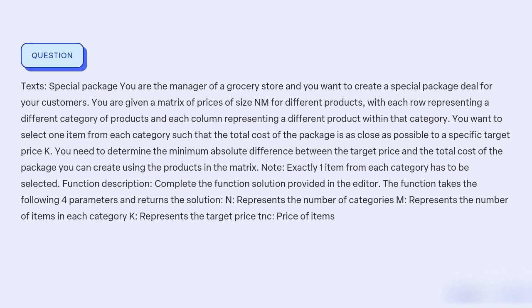How can we create a special package deal for customers in a grocery store by selecting one item from each category, in order to minimise the absolute difference between the total cost of the package and a specific target price?